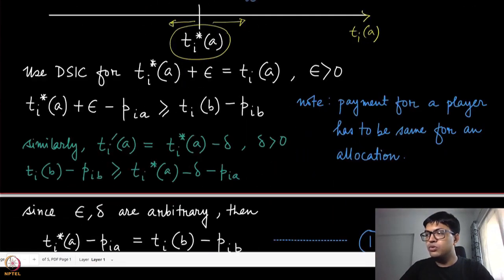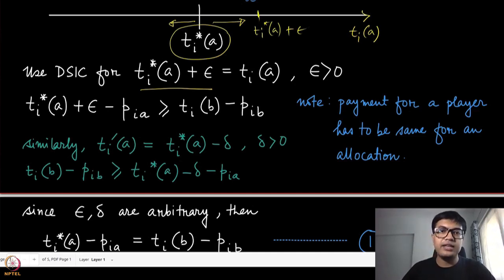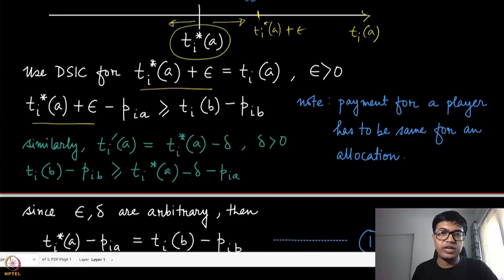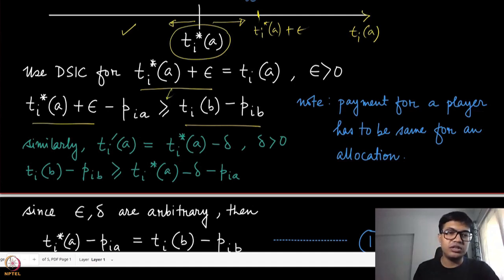Consider t_i(a) slightly above the threshold, say t_i*(a) + ε. We apply the DSIC condition: if you reveal your valuation truthfully, the utility you get is at least as much as if you misreport. If you misreport to something below the threshold so the outcome becomes b, the DSIC inequality must hold. Since misreporting without changing the outcome doesn't help, the only way to change your payoff is by changing the outcome.